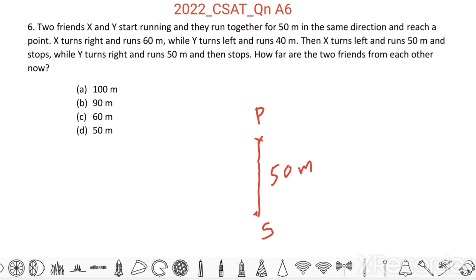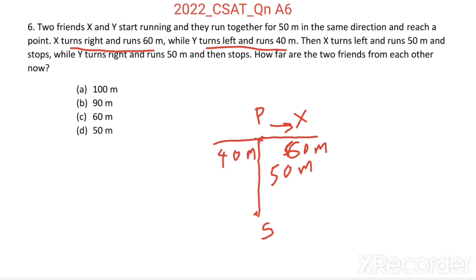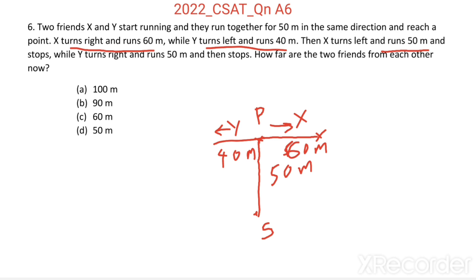From P, X turns right and runs 60 meters — this is X and he runs 60 meters. While Y turns left and runs 40 meters — this is Y. Then from here, X turns left and runs 50 meters and stops. From this point, Y turns right and runs 50 meters and stops.